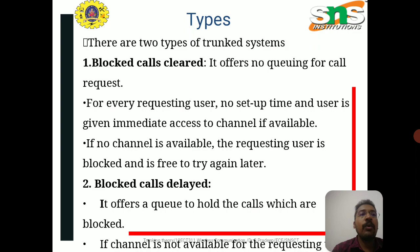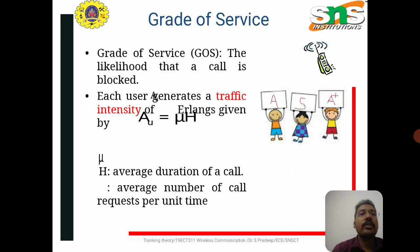The two types of trunked systems are: blocked calls cleared and blocked calls delayed. In blocked calls cleared, there is no queuing for call requests — every requesting user is given immediate access to a channel if available, with no setup time. If no channel is available, the requesting user is blocked and is free to try again later. In blocked calls delayed, a queue is offered to hold calls which are blocked when no channel is available.